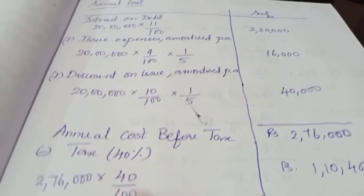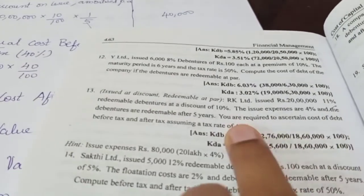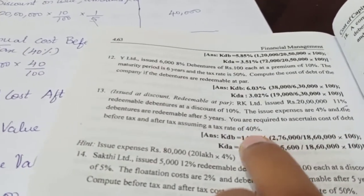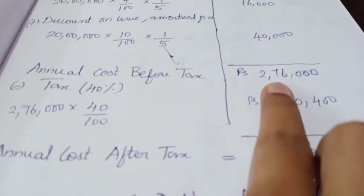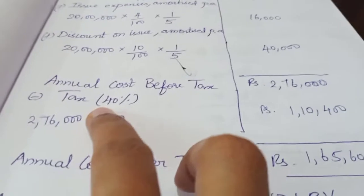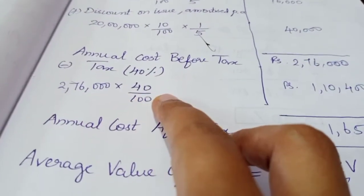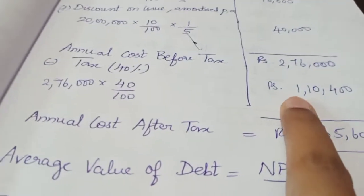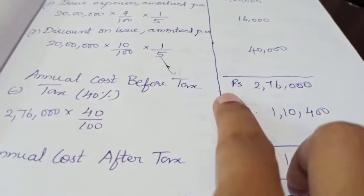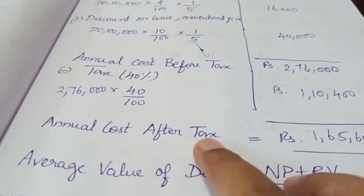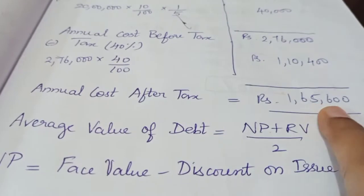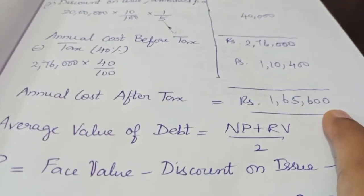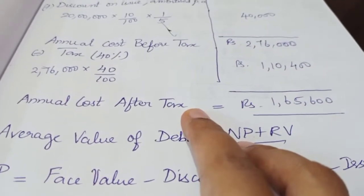The tax rate for this question is 40%. To find annual cost after tax, we calculate: 2,76,000 into 40 by 100 equals 1,10,400. Then annual cost after tax equals 2,76,000 minus 1,10,400, which gives Rs. 1,65,600. That is the annual cost after tax.